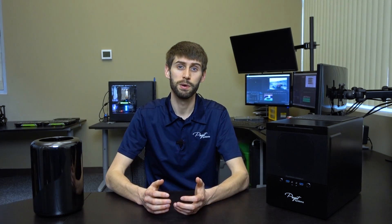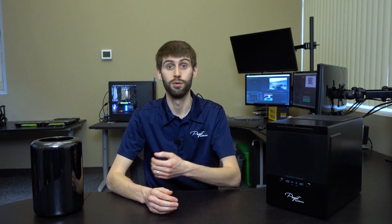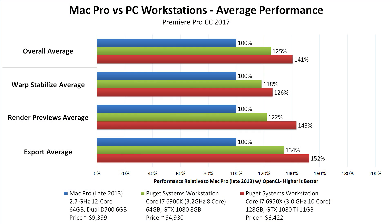Since the Mac Pro is about four years old and about two generations behind the hardware in our PCs, it shouldn't really be a surprise that our systems outperform it in Premiere. Looking at a broad overall average across everything we tested: moving from the Mac Pro to the PC at about half the cost gives you about a 25% performance bump. If your budget is a bit larger, our $6,400 PC should be significantly faster — around 50% faster exports, 40% faster preview rendering, and around 25% faster warp stabilization times.